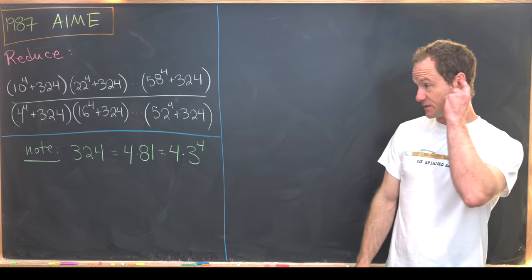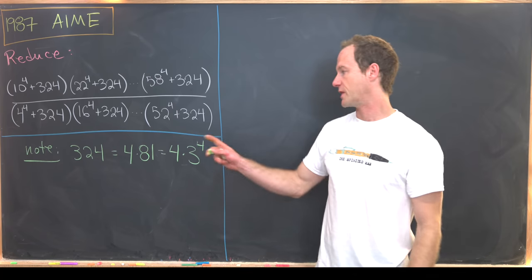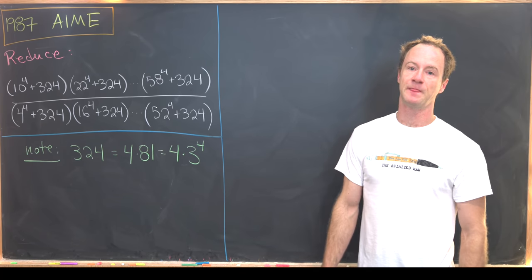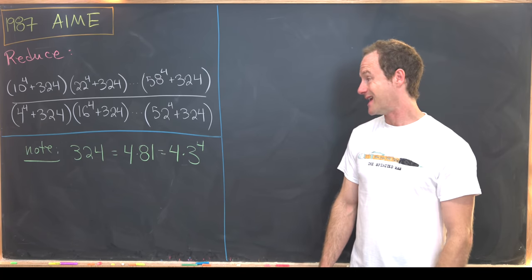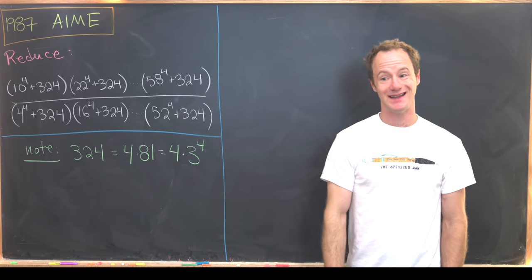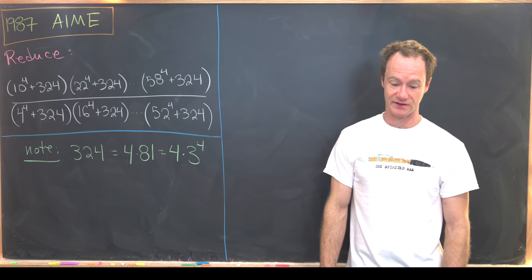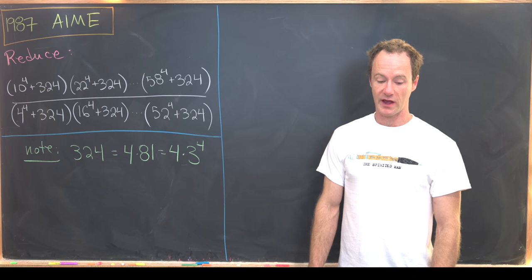Obviously it's divisible by 4 because 24 is divisible by 4 and 300 is divisible by 4. And then it's divisible by 9 because 2 plus 4 is 6 plus 3 is 9. And you can check again that after dividing out a 9 you get another thing that's divisible by 9.